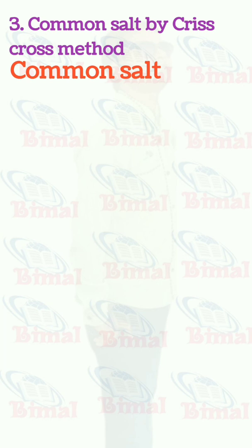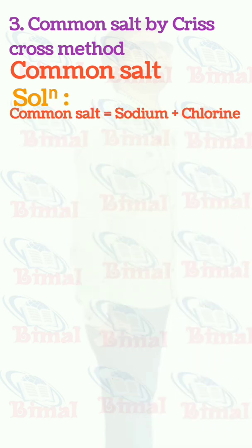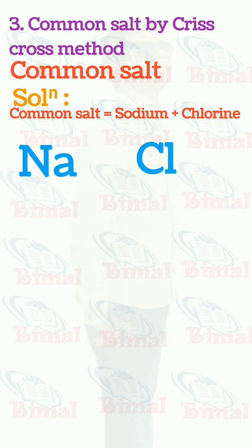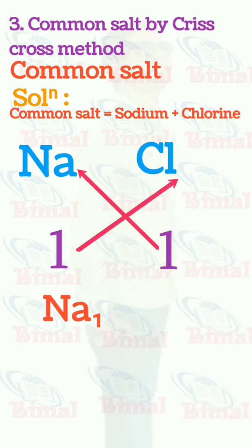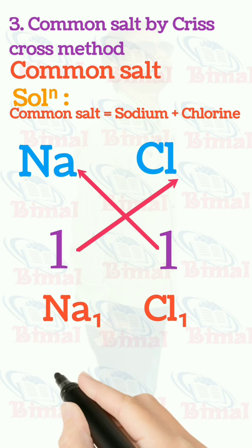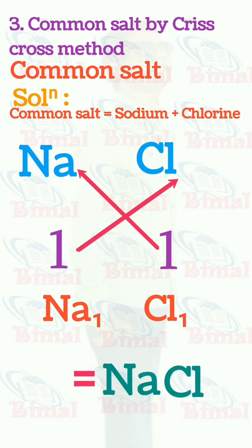Molecular formula of common salt by criss-cross method. Common salt is equal to sodium plus chlorine. Symbol for sodium is Na, symbol for chlorine is Cl. Valency of sodium is 1 and valency of chlorine is 1. When criss-cross is done, the valency is exchanged, so it will be Na1 Cl1, and the formula becomes NaCl. The valency 1 is not written, so this is simply NaCl, the molecular formula for common salt.